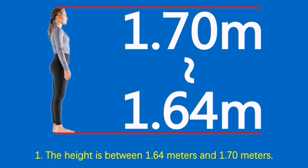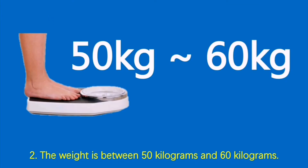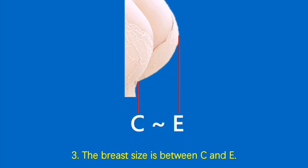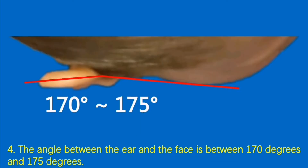1. The height is between 1.64 meters and 1.70 meters. 2. The weight is between 50 kilograms and 60 kilograms. 3. The breast size is between C and E. 4. The angle between the ear and the face is between 170 degrees and 175 degrees.